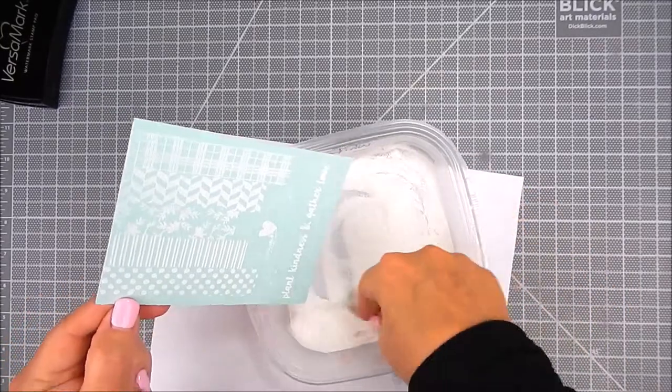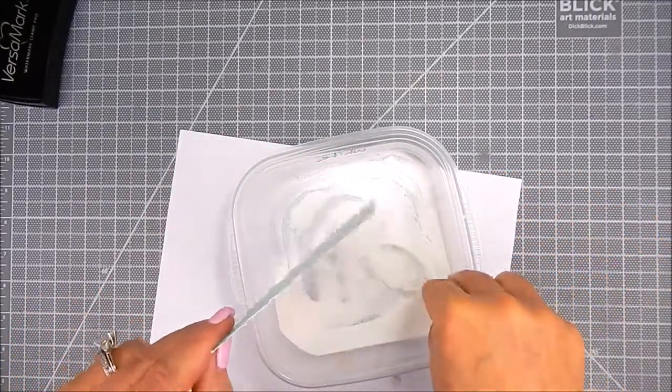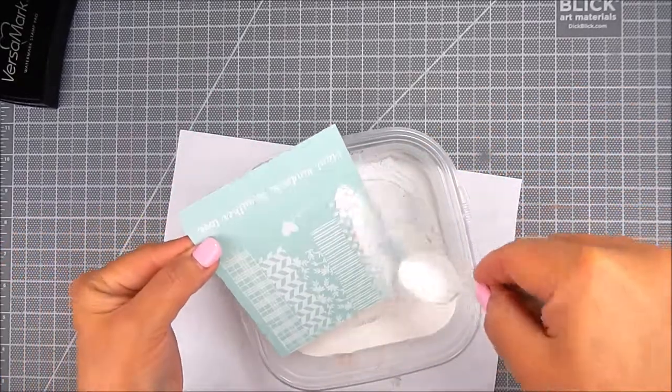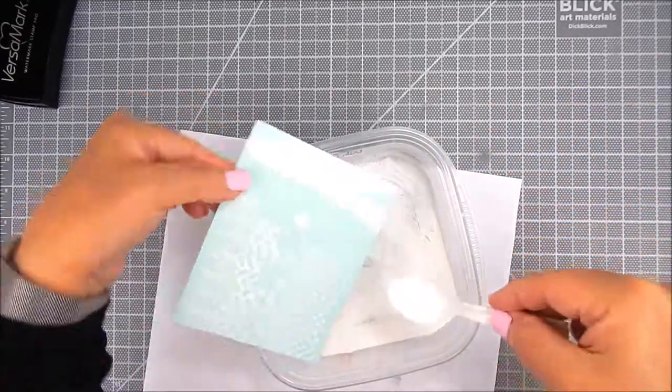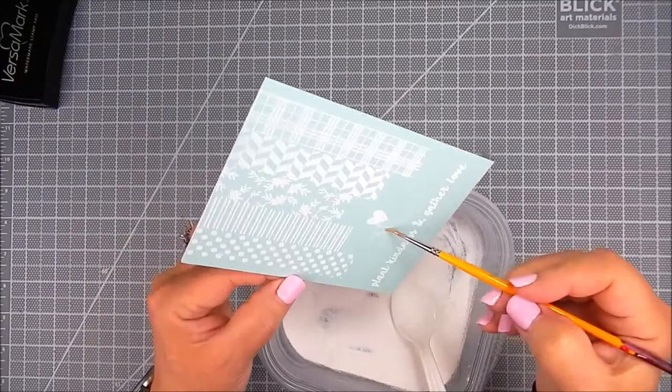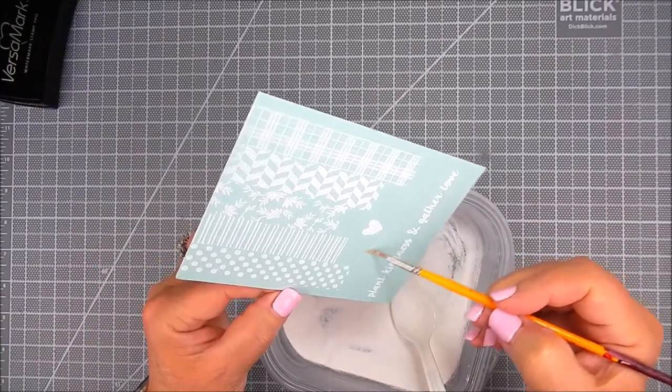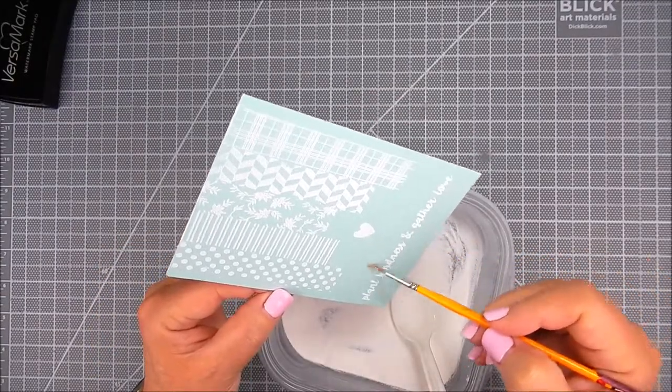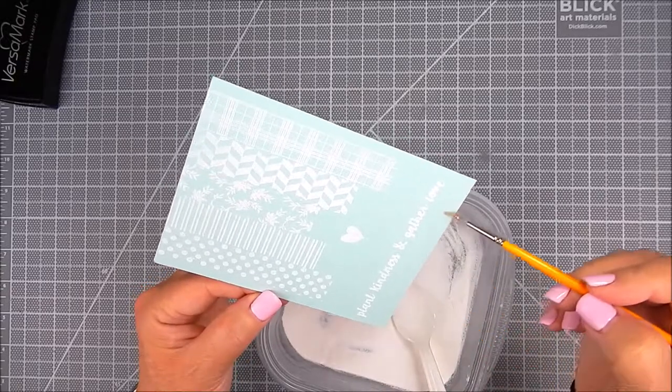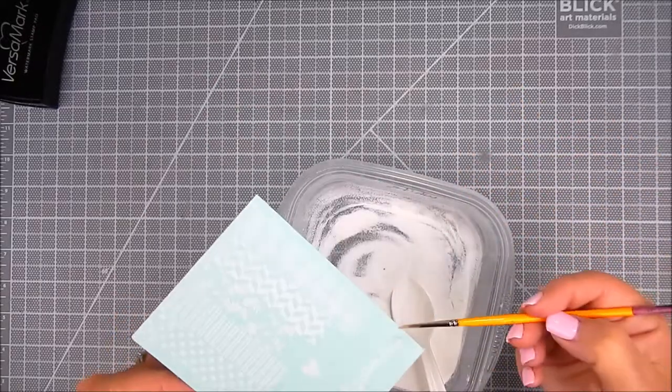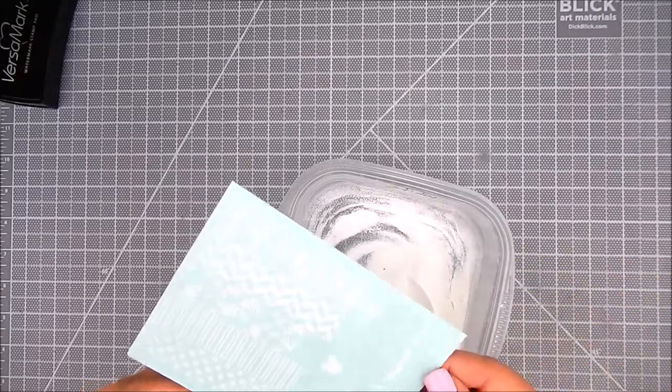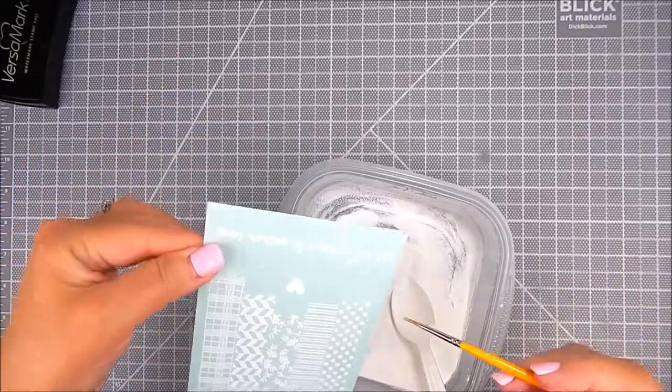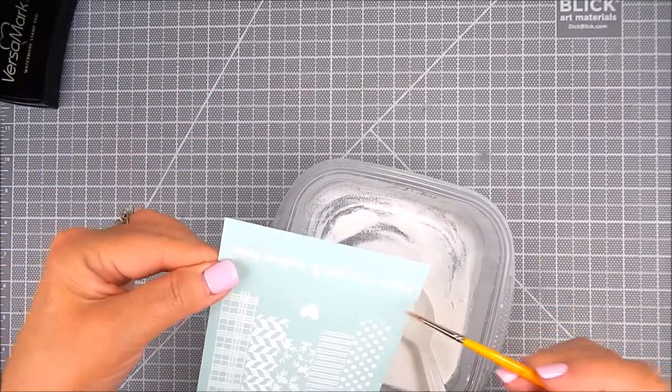I make sure I coat it really good because almost the whole card front is going to be heat embossed. Next I use a very narrow paintbrush to remove any excess embossing powder. If you heat emboss and you have stray powder on the card, anything where the stray powder is, it's going to be embossed as well so it will show up.